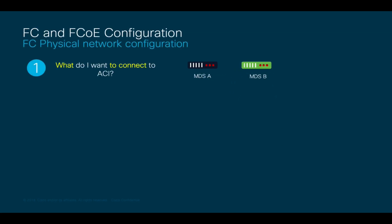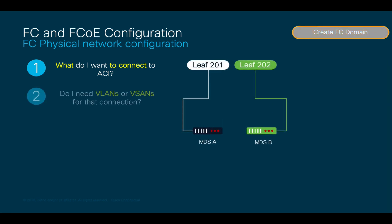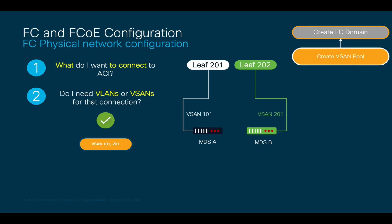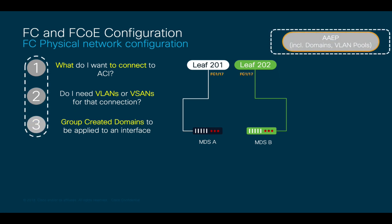Let's start configuring our scenario by focusing on the Fiber Channel side first, connecting our leaf nodes to the MDS switches. The first question is: what do I want to connect to ACI? The answer is I want to connect my MDS-A and MDS-B Fiber Channel switches, so I will create a Fiber Channel domain for both of them. The second question is: do I need VLANs or VSANs for such connections? I will use VSAN 101 for my MDS-A connection and VSAN 201 for MDS-B, so I will create a VSAN pool including them. The third step is to create an AEP and add our Fiber Channel domain, which already includes the VSAN pool.